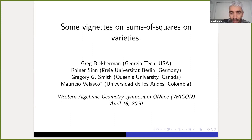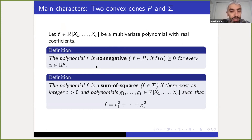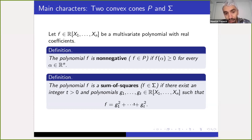The main characters of this talk are two convex cones, which we will call P and Sigma. Let's suppose that f is an n-variable polynomial with real coefficients. We say that f is a non-negative polynomial, and write f belongs to P, if it assumes only non-negative values in R^n. We say that f is a sum of squares and write f belongs to Sigma if there exists an integer t and polynomials g_1 up to g_t such that f is the sum of their squares.